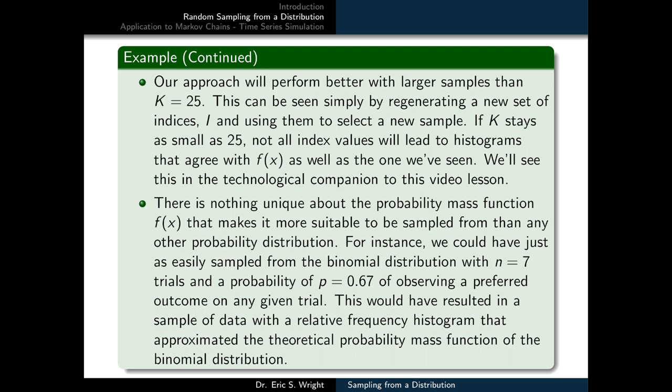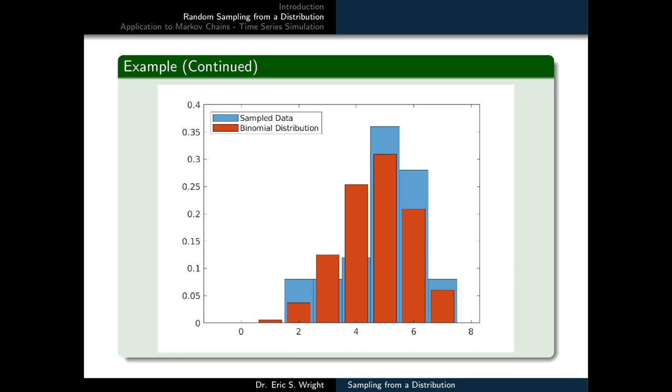There is nothing unique about the probability mass function f of x that makes it more suitable to be sampled from than any other probability distribution. For instance, we could have just as easily sampled from the binomial distribution with n equals seven trials and a probability of p equals 0.67 of observing a preferred outcome on any given trial. This would have resulted in a sample of data with a relative frequency histogram that approximated the theoretical probability mass function of the binomial distribution. If we were to actually carry out this experiment, the empirical histogram of the relative frequencies of the sample and then the theoretical histogram for the binomial distribution itself might compare somewhat like the two histograms that we're seeing in this diagram.